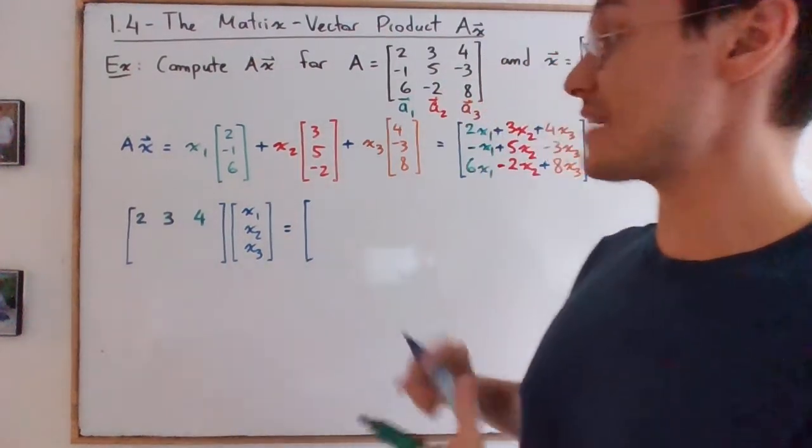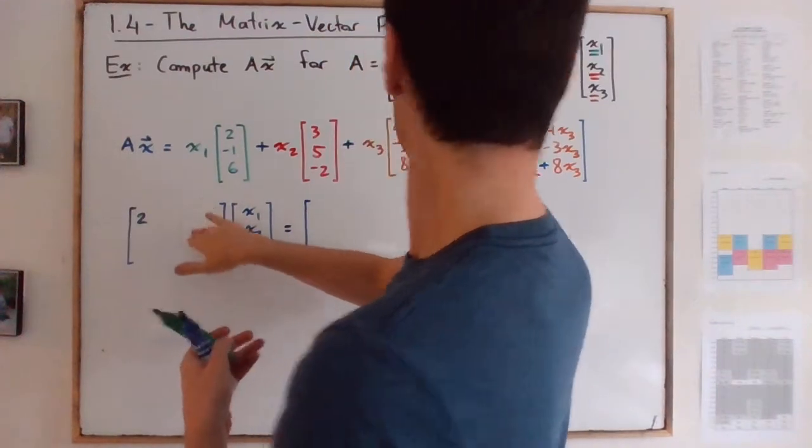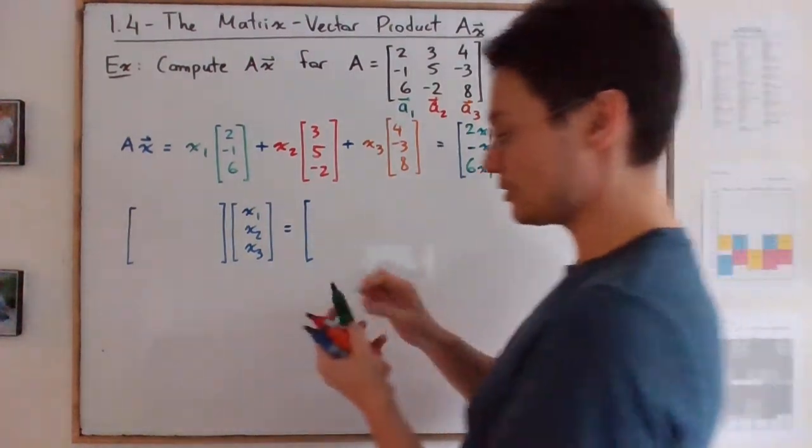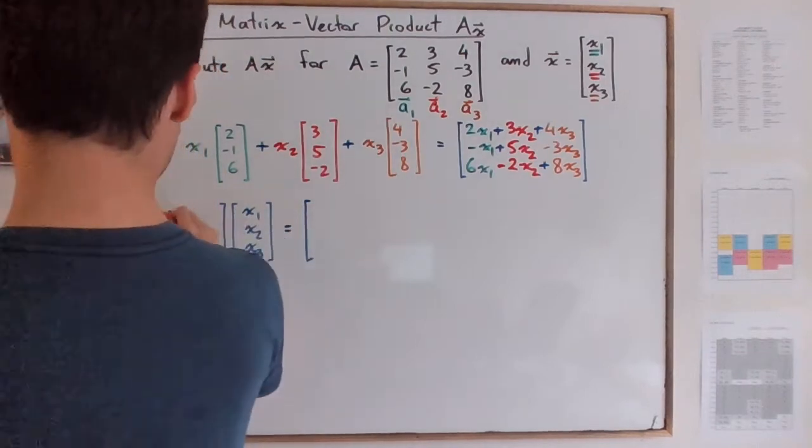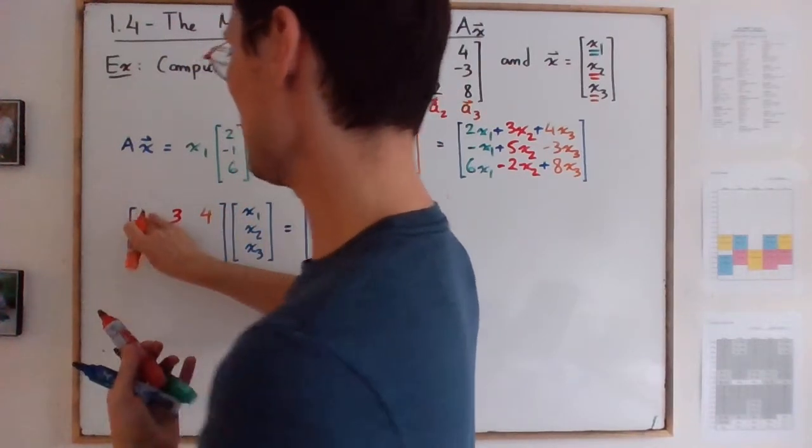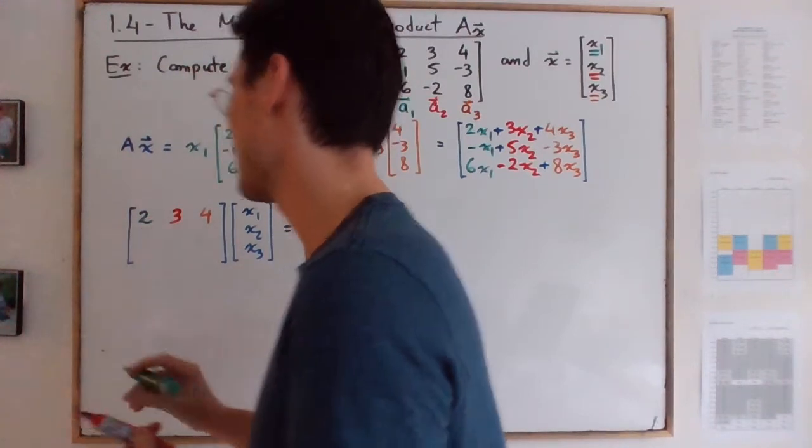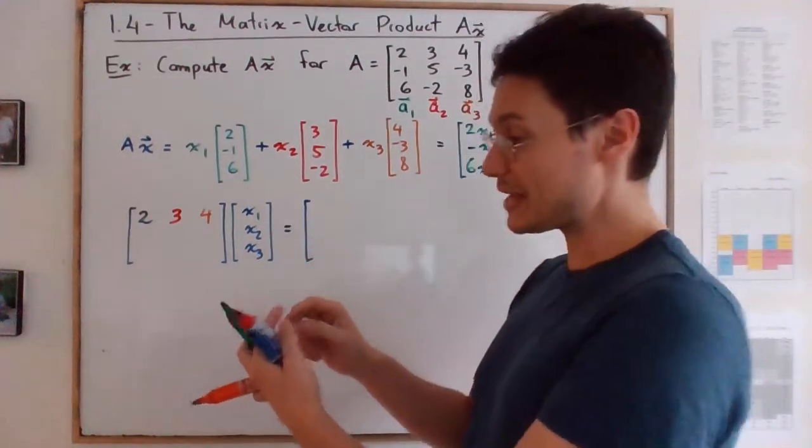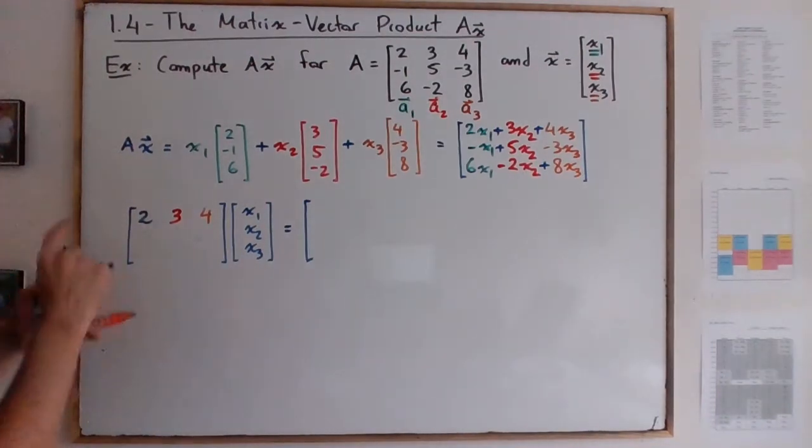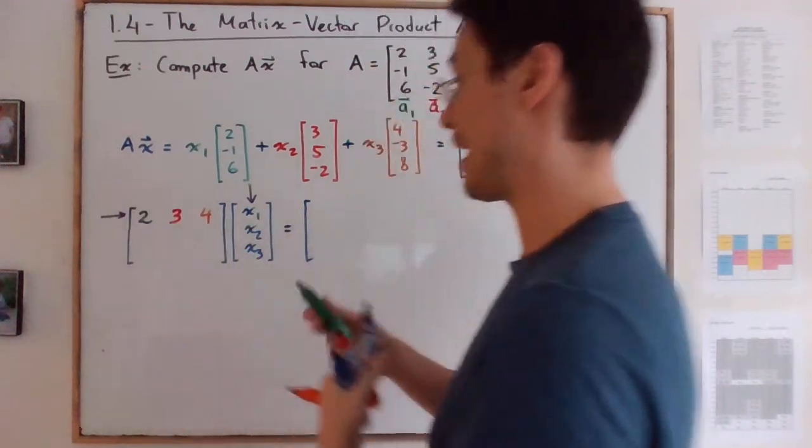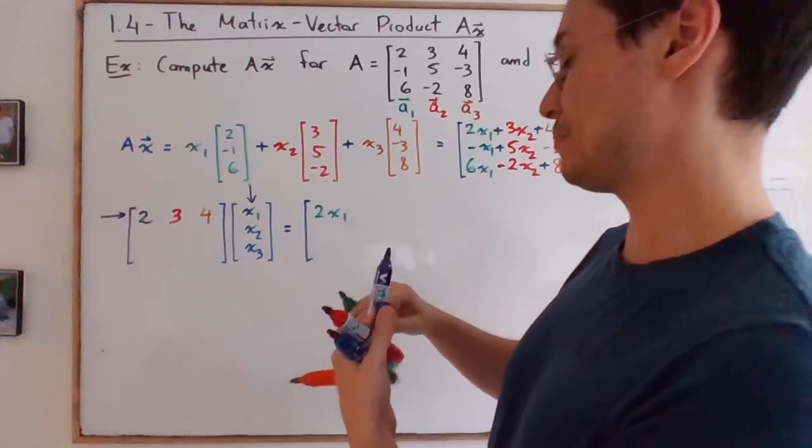And as we do the matrix vector product, let's color code. So we will get 2, 3, 4. My green is like purplish, I suspect I put the wrong cap. But then look, what's important, what's interesting is that the result, you can have a look at this row and this column, and you will get this times this times this. So you have here 2x1 plus 3x2 plus 4x3.